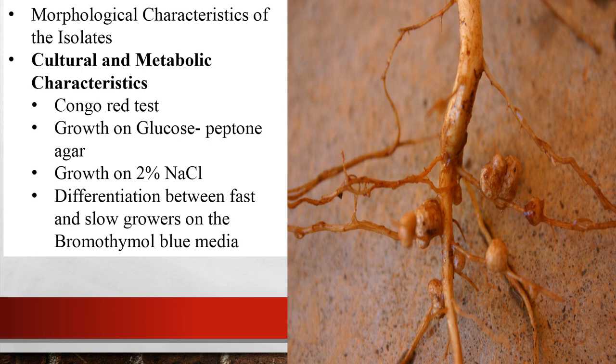For culture and metabolic characterization, the first test is the Congo red test. The purity of rhizobial isolates is detected by adding Congo red to yeast mannitol agar media, because most rhizobia absorb the dye very little. The next test is growth on glucose peptone agar. This medium is used to differentiate rhizobia, which usually show little or no growth without altering the pH of the medium. Contaminants like Agrobacterium show massive growth with a distinct change in pH.